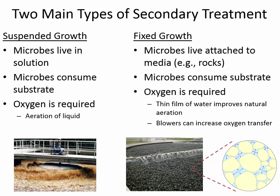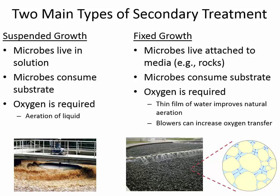When it works, fixed growth is a great option because of reduced requirements for electricity. Here's a cross-sectional diagram showing a rotating arm at the surface. Sometimes the rotation of the arm can be driven just by the jet coming out — the water exiting one side is enough to propel the arm forward. Usually they'll put a motor on it just in case they need to keep spinning during low flow. The main idea is that flow coming in has a high concentration of BOD, and flow coming out will have a lower concentration.